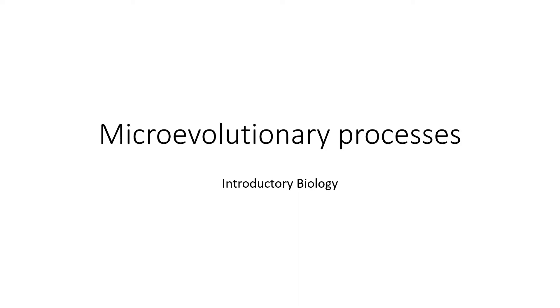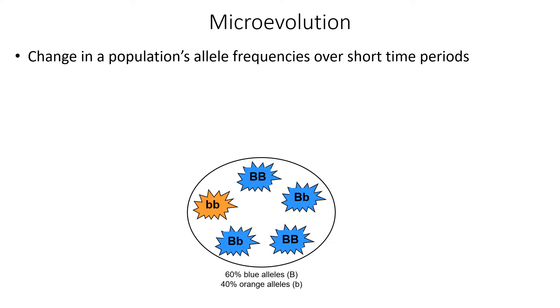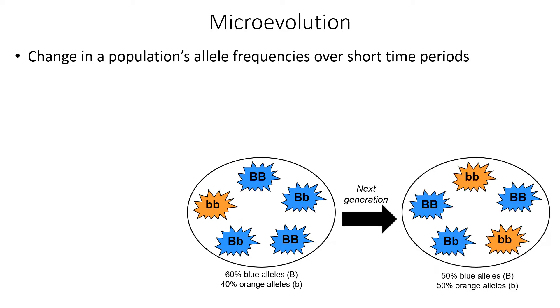Let's start by reviewing the concept of microevolution. Microevolution refers to change in a population's allele frequencies over short time periods. To illustrate, here we have a small population of organisms with two color phenotypes — the big B allele codes for blue and the little b allele codes for orange. In this generation, we see that 60% of the color alleles are blue and 40% are orange. If we follow this population to the next generation, we see that now 50% of the alleles code for blue and 50% code for orange.